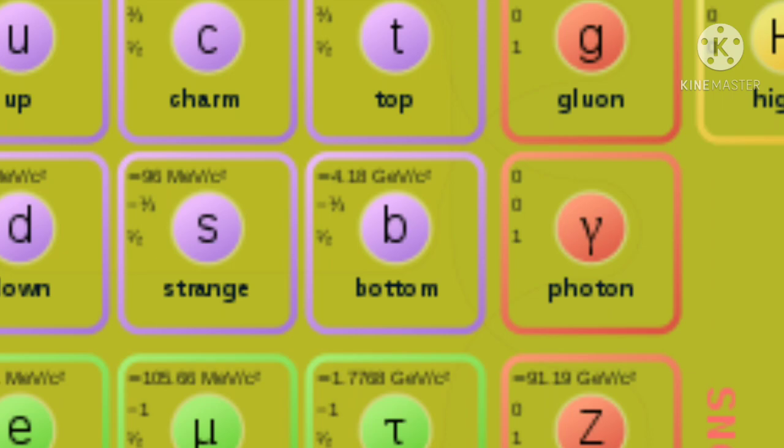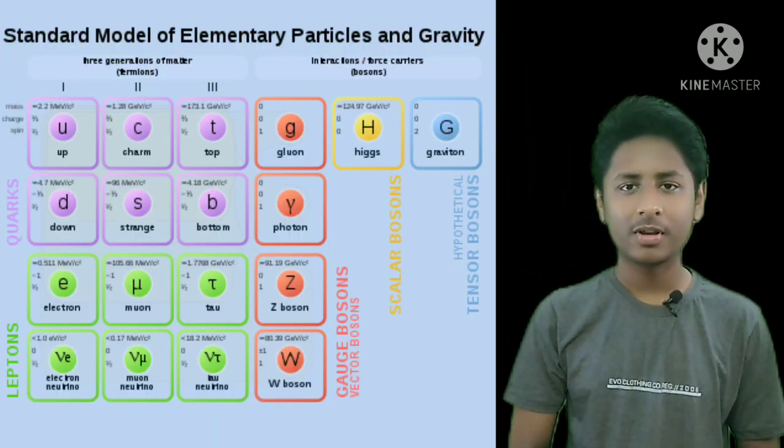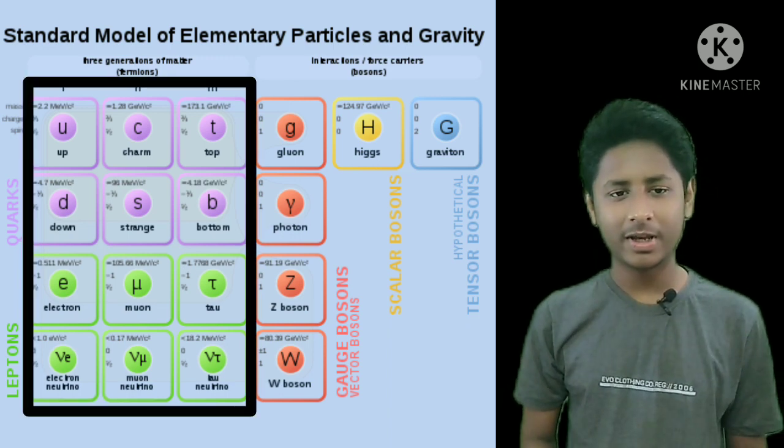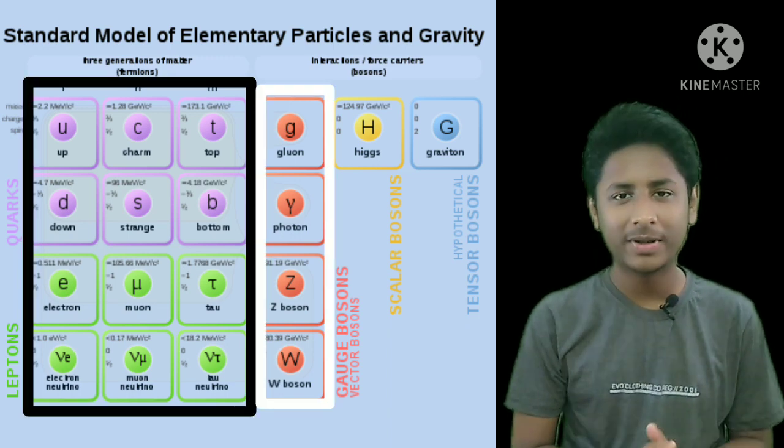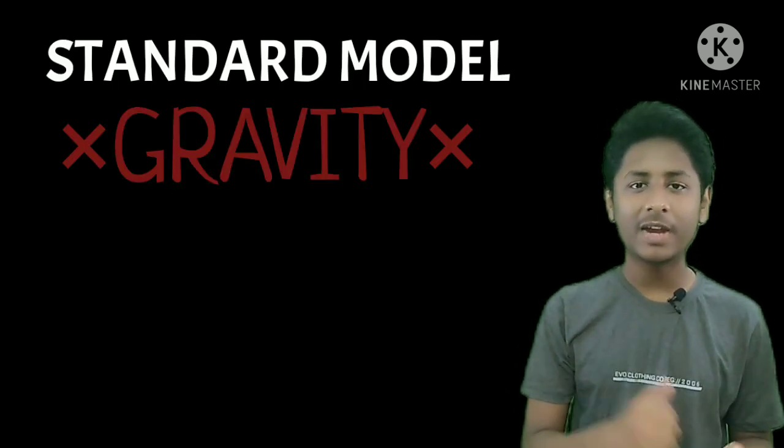To start with, the best theory which we have that describes our universe is the standard model of particle physics. It describes all of the known matter particles and three of the four fundamental forces of nature. However, the standard model fails to describe gravity.